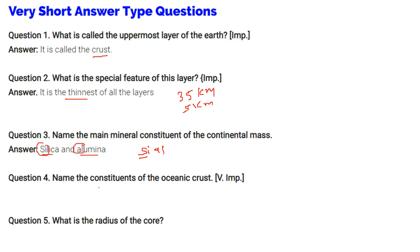Name the constituents of oceanic crust. So silica and magnesium, these are the constituents of the oceanic crust.